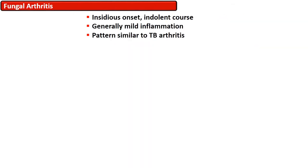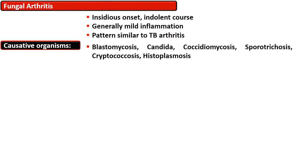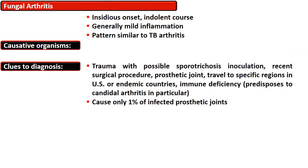Fungal arthritis is insidious in onset with an indolent course. Generally there is mild inflammation, and the pattern is similar to tuberculous arthritis. Common causative organisms include Blastomyces, Candida, Coccidioides, Sporothrix, Cryptococcus, and Histoplasma.